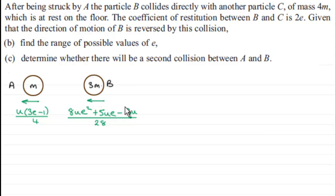And this is the speed that we found in part B after B hit the particle C. It was coming back in this direction to the left with a speed of 8u e squared plus 5u e minus 3u all over 28.